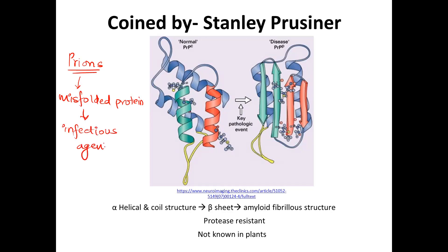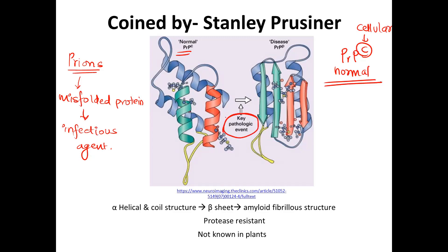Now why do we call it an infectious agent? Let us try and understand what goes on behind this prion. We have a normal protein in our brain called PrPC. This C stands for cellular, which is the normal form of this protein. Now when there is a certain pathological event — we don't know exactly what this event is — there is a shift from the normal PrPC protein to the abnormal PrPSc protein.